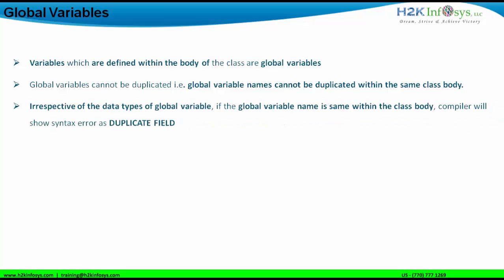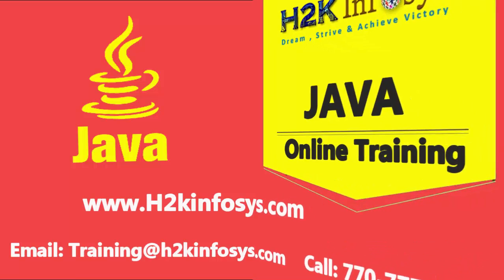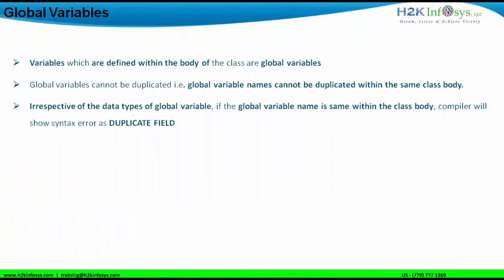Irrespective of the data types of global variables — whether string, integer, long, float, or double — if the global variable name is the same within the class body, the compiler will show a syntax error as 'duplicate field'.